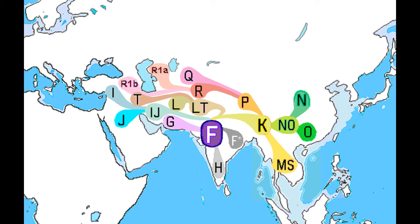So we've arrived at F. This is the ancestor of 90% of males outside of Africa, and as you can see here, it's given rise to rather a lot of different haplogroups. The first lineage to split off is G, then H splits off, and then IJ and K — with IJ to the west and K to the east splitting off further.